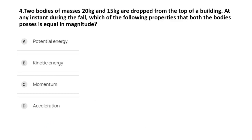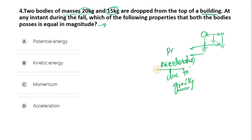Next problem: two bodies of masses 20 kg and 15 kg are dropped from the top of a building. At any instant during the fall, which of the following properties that both the bodies possess is equal in magnitude? When these two bodies are falling from the same height, there is only one common thing - that is acceleration due to gravity. It means that acceleration is common for these two bodies. So option D is the right answer.